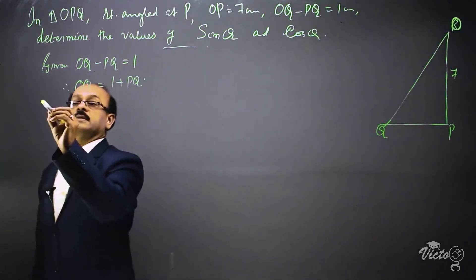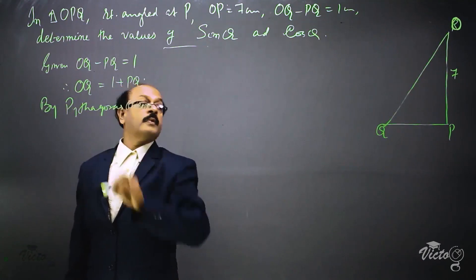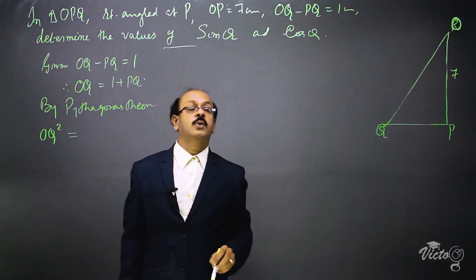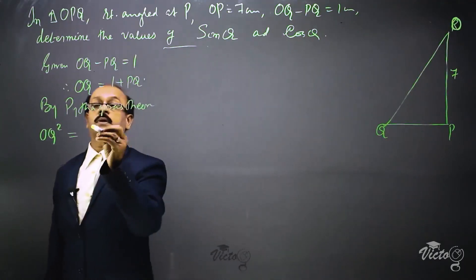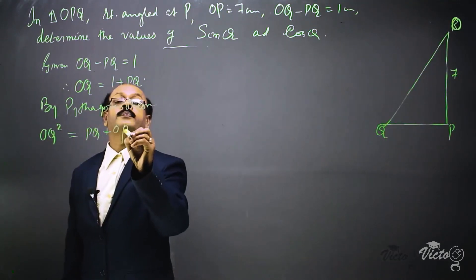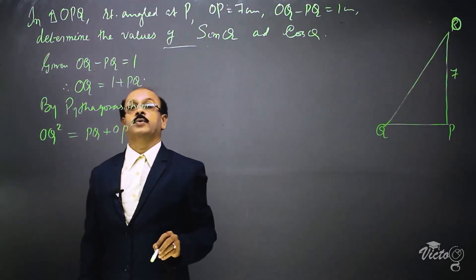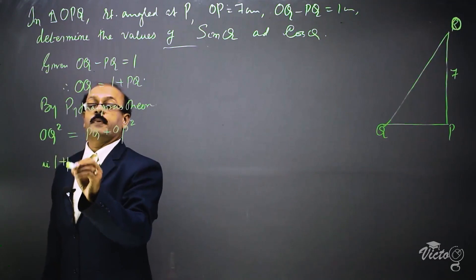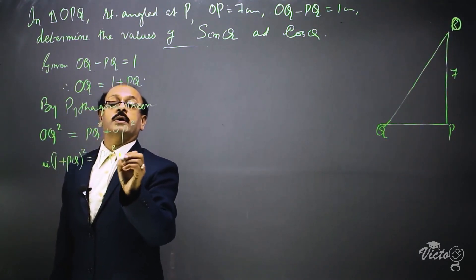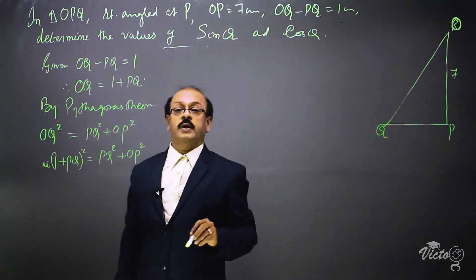By Pythagoras theorem, OQ squared equals PQ squared plus OP squared. Instead of OQ, we substitute the value 1 plus PQ, so 1 plus PQ, the whole square, is equal to PQ squared plus OP squared.